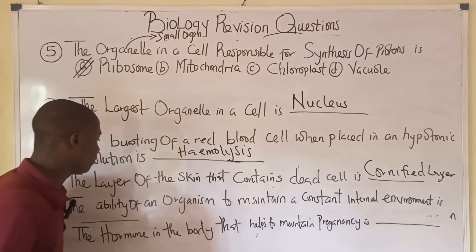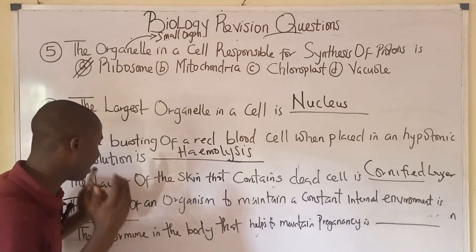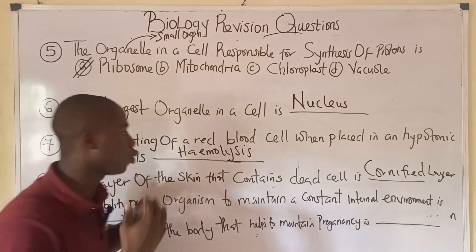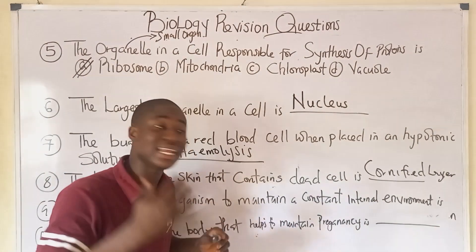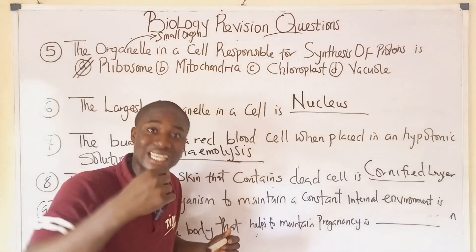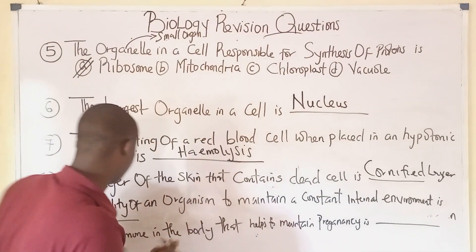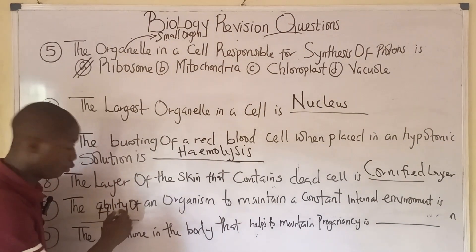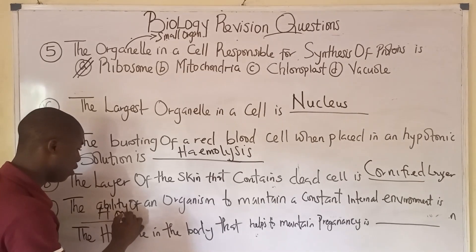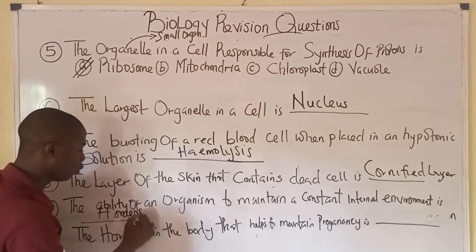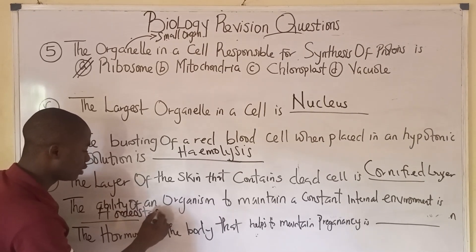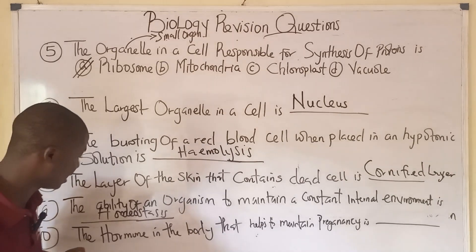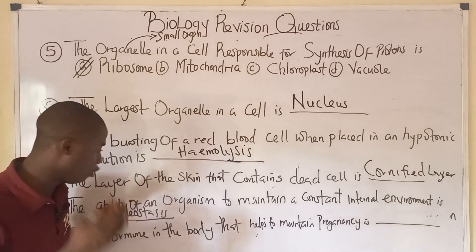Question nine: the ability of an organism to maintain a constant internal environment is called homeostasis.